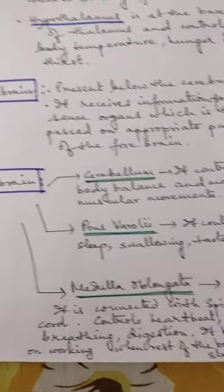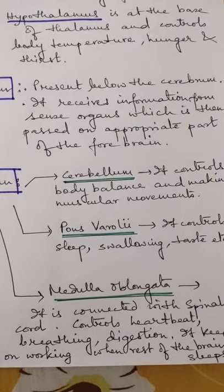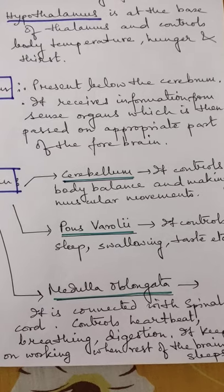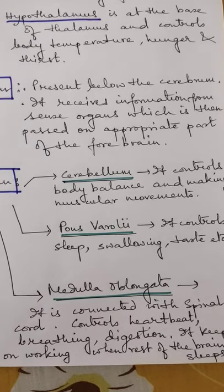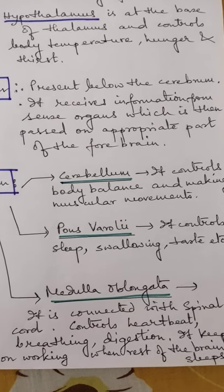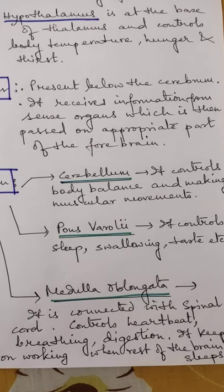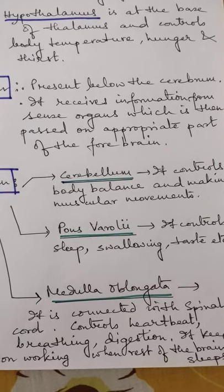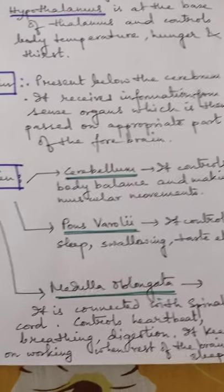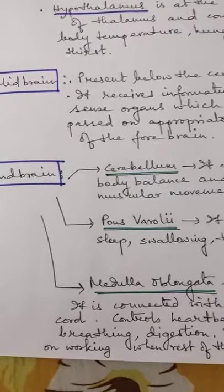Next part is midbrain. It is present below the cerebrum. You know cerebrum forms about 70% of our brain. Midbrain receives information from sense organs which is then passed on to the appropriate part of the forebrain. So it forms as a connection.